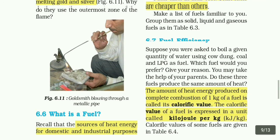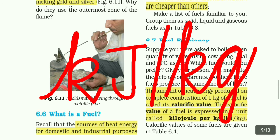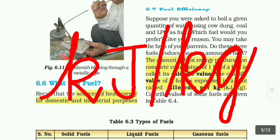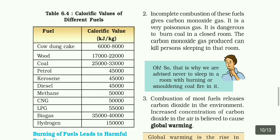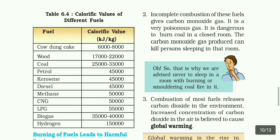The next topic is fuel efficiency. The amount of heat energy produced on complete combustion of 1 kg of fuel is called calorific value. The calorific value of a fuel is expressed in a unit called kJ per kg — that is kilojoules per kilogram. K should be in small, J in capital, then kg in small. Here they gave some of the calorific values of different fuels like cow dung cake, wood, coal, petrol, kerosene, diesel, methane, CNG, biogas, and hydrogen.